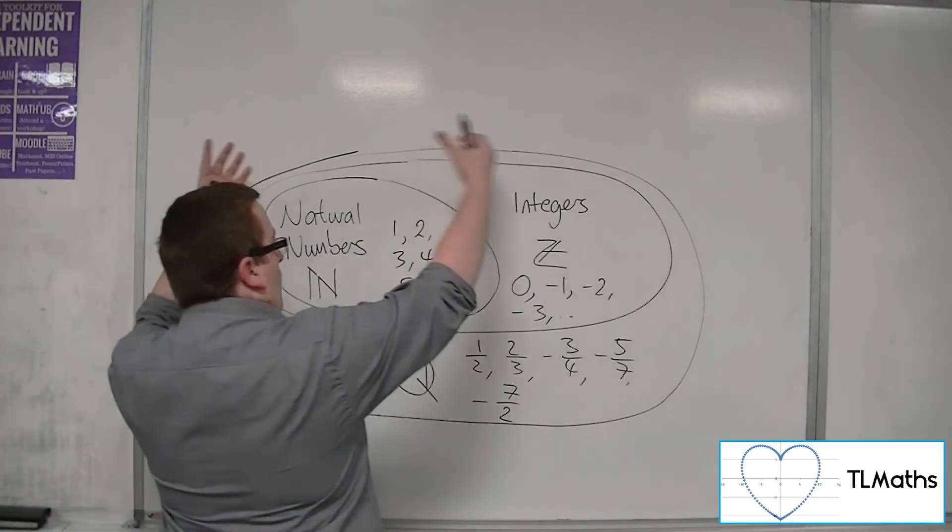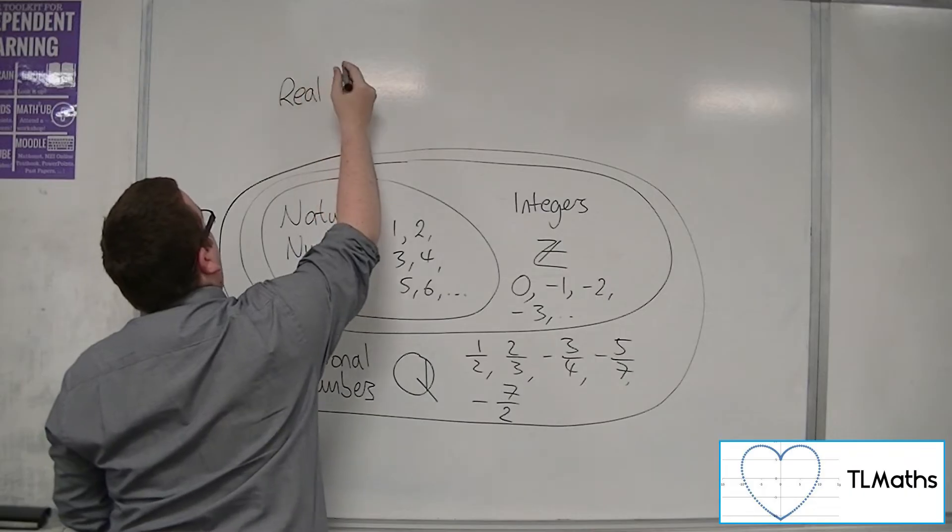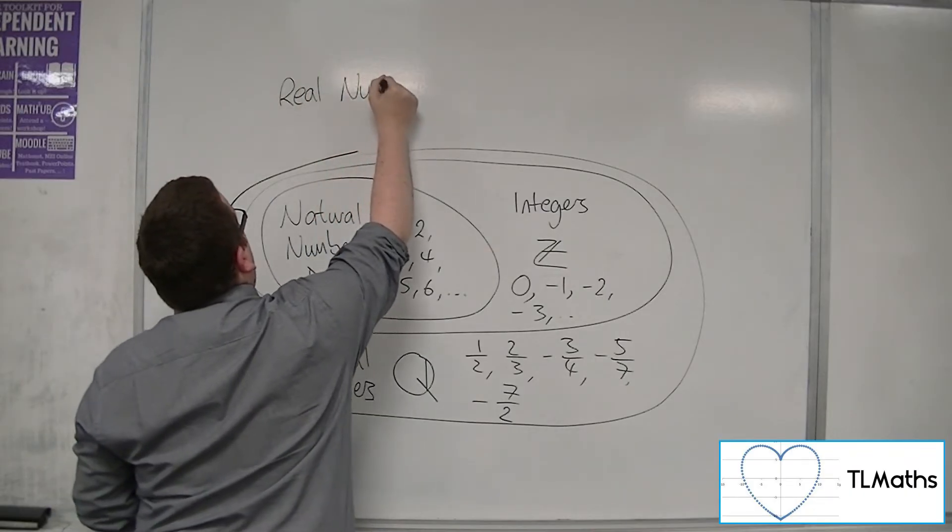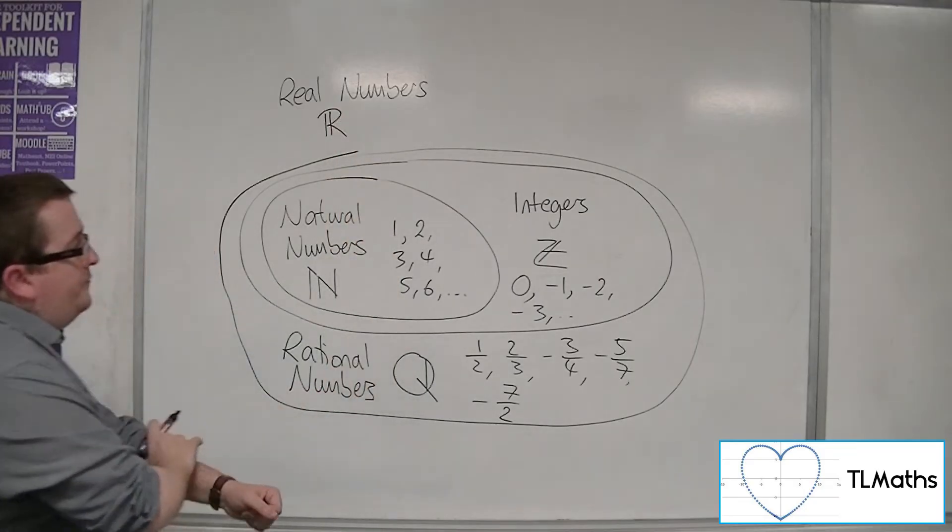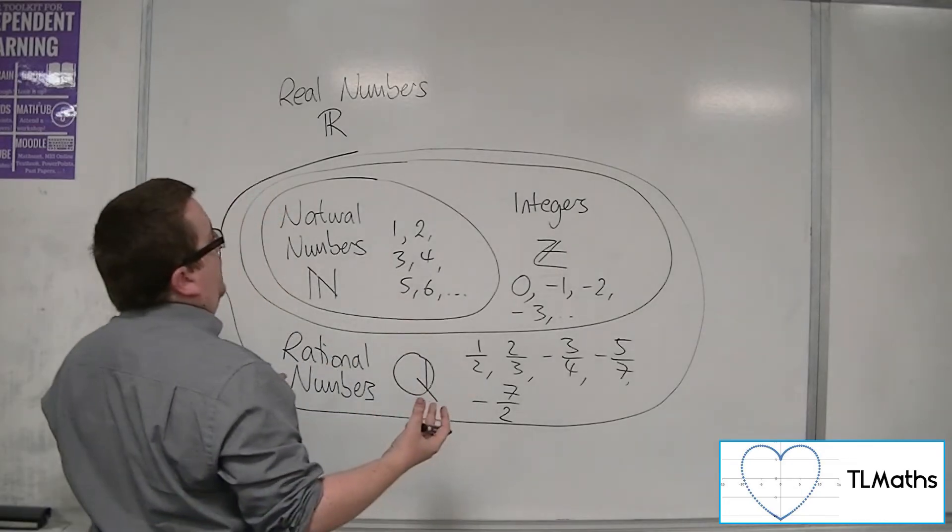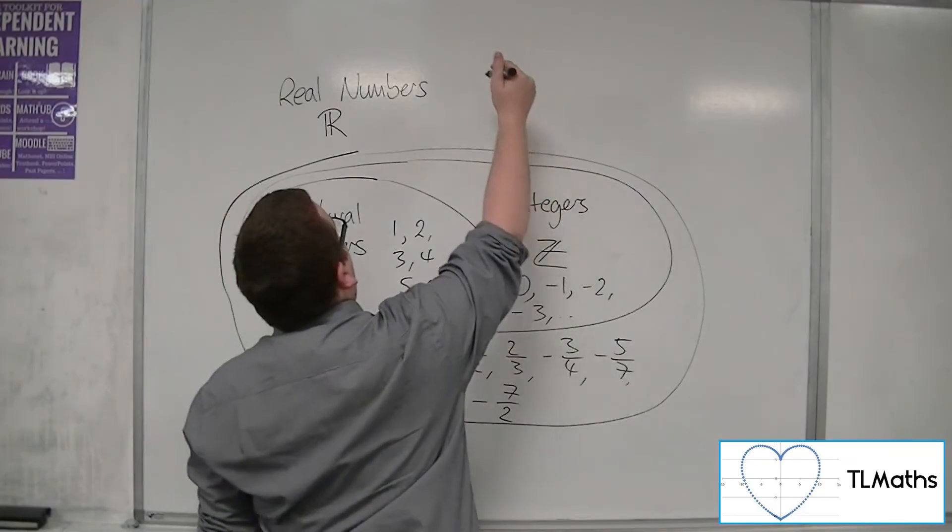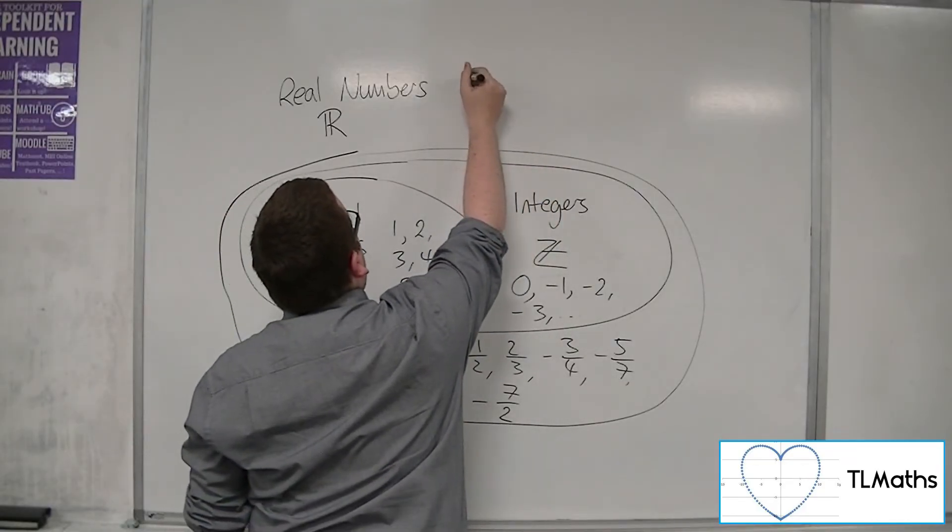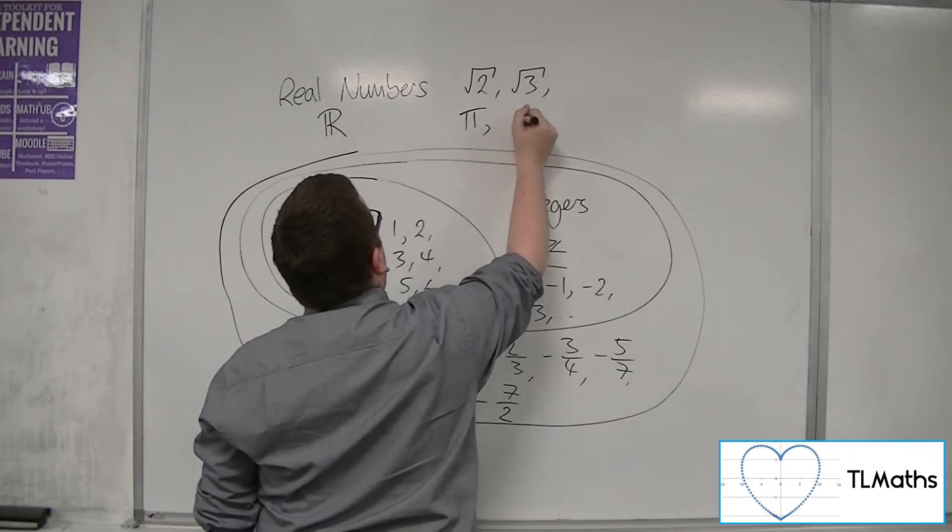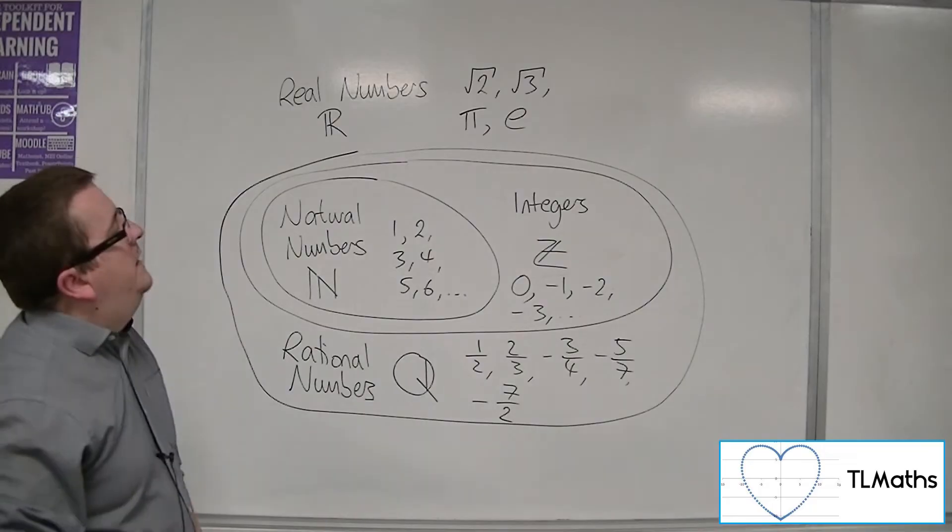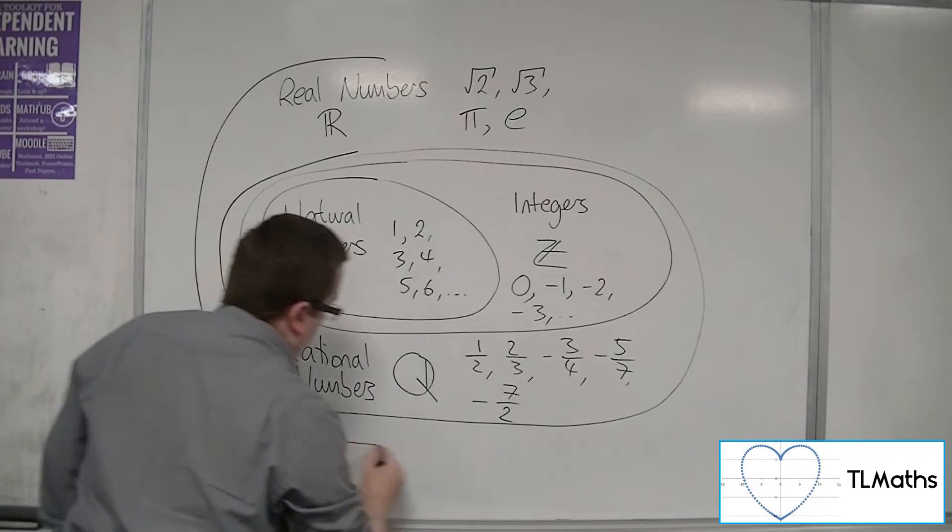And to generalise this, this includes all of these plus all of those irrational numbers as well. And we refer to those as the real numbers. Now, the real numbers include all the natural numbers, all the integers, all the rational numbers, and also things like root two, root three, pi, e. All those irrational numbers as well.